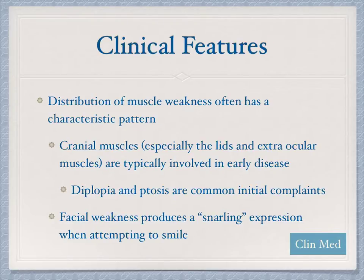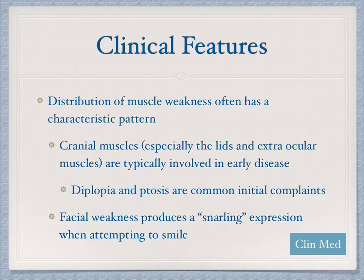The muscle weakness associated with the disease tends to follow a characteristic pattern. You will typically see weakness in the cranial muscles, particularly of the eyelids and extraocular muscles, because we use these muscles so often — think about how often you blink every minute and move your eyes. This disease affects skeletal muscles, not just limbs, so moving the eyes and blinking can lead to diplopia and ptosis, which are common features.